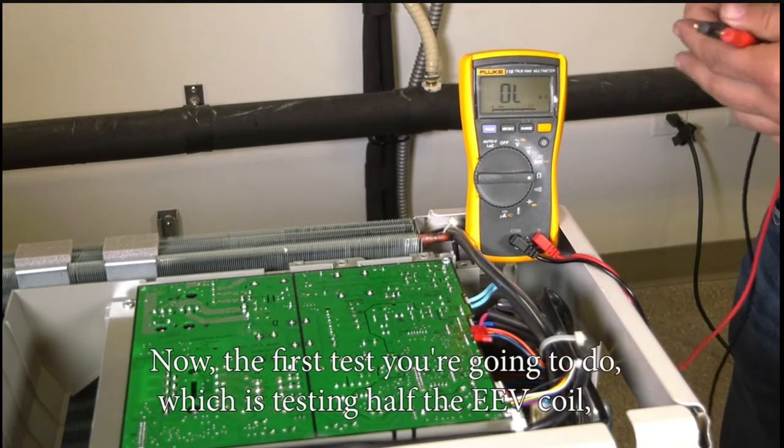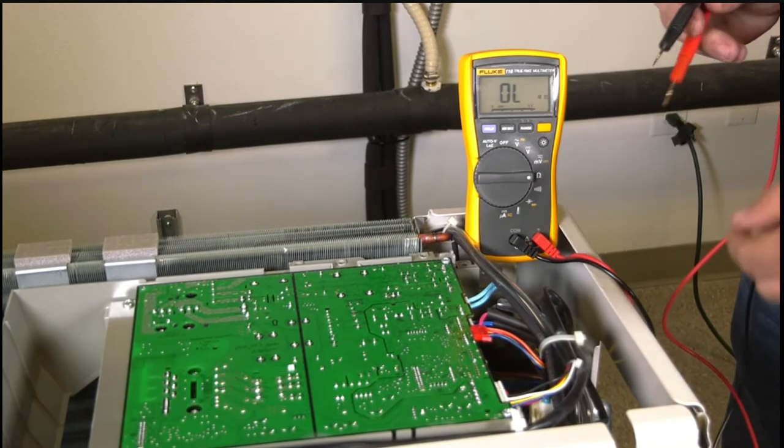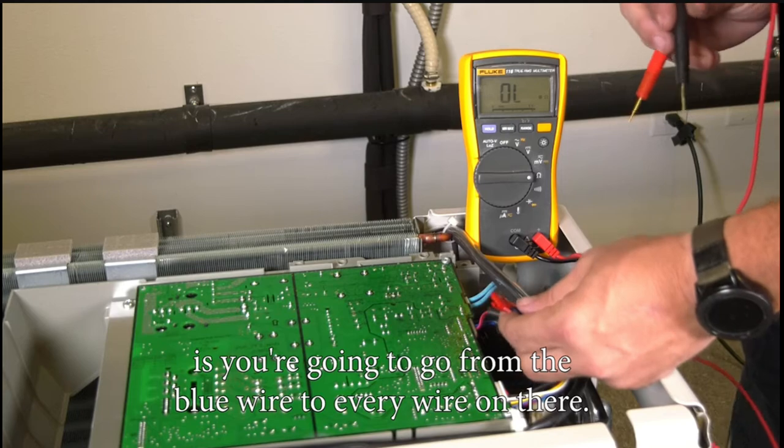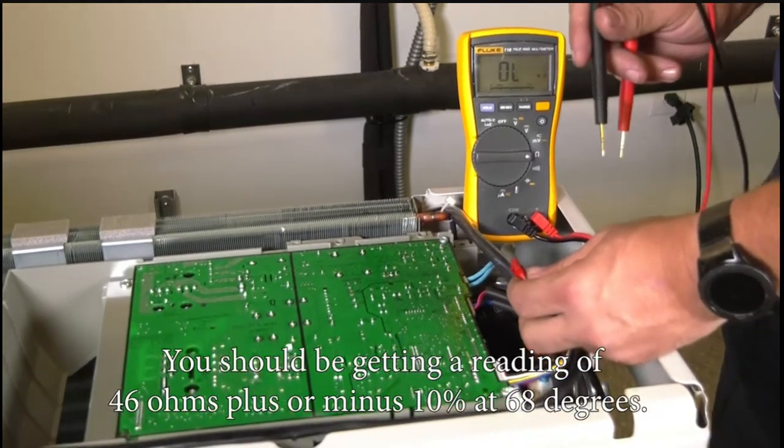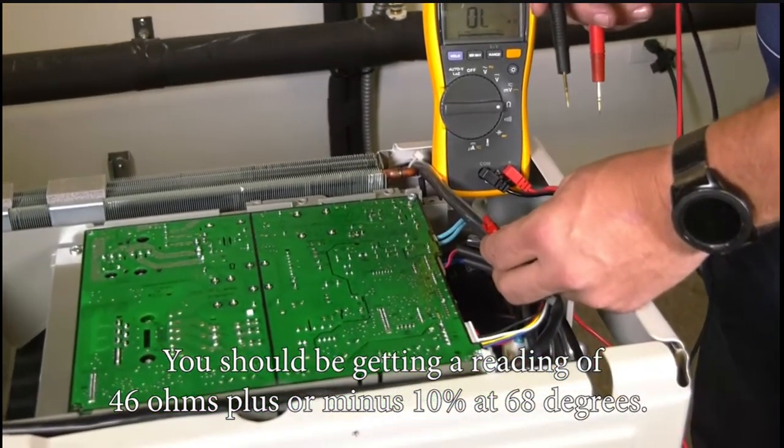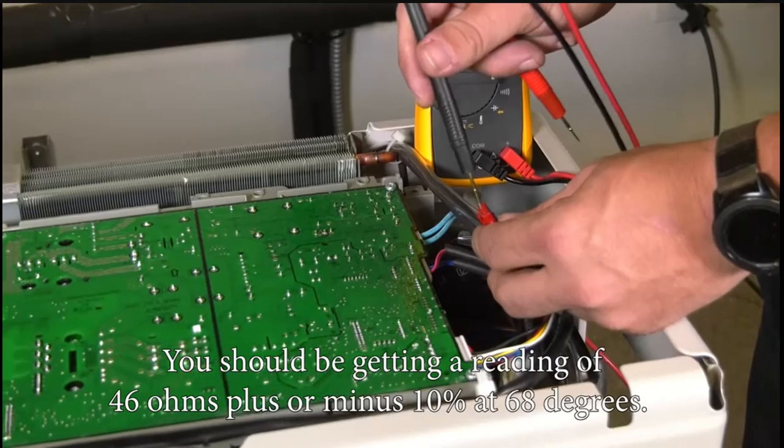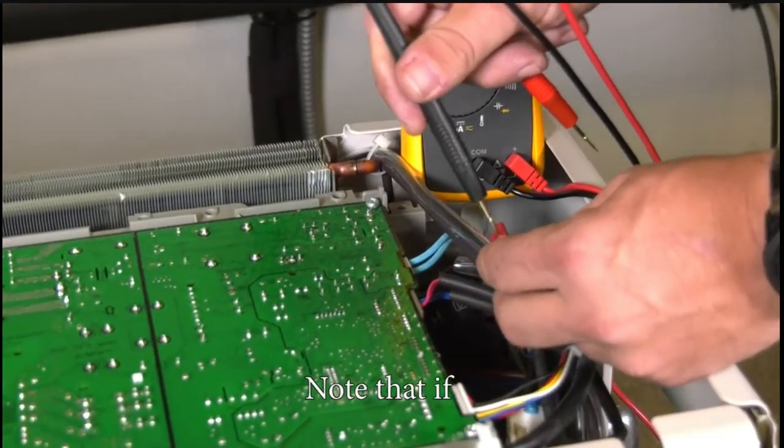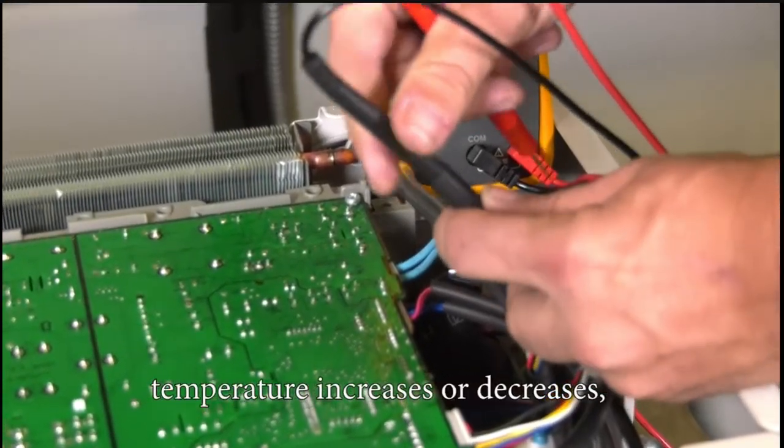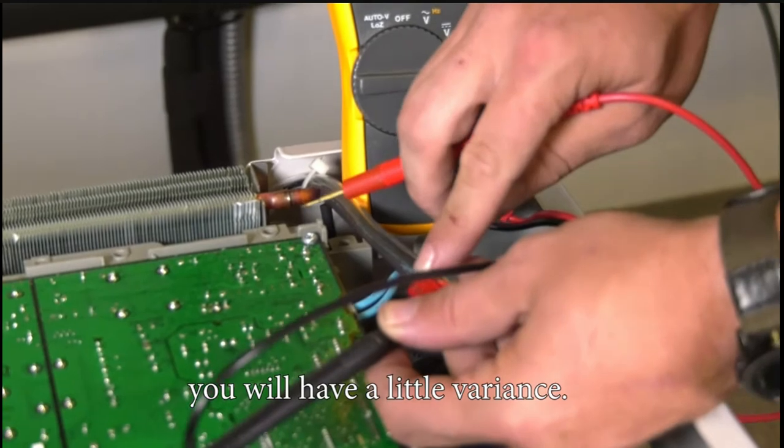Now the first test you're going to do, which is testing half the EEV coil, is going from the blue wire to every wire on there. You should be getting a reading of 46 ohms plus or minus 10 percent at 68 degrees. Note that if temperature increases or decreases, you will have a little variance.